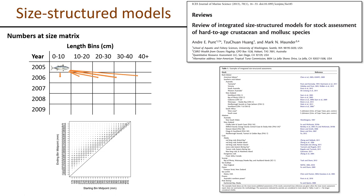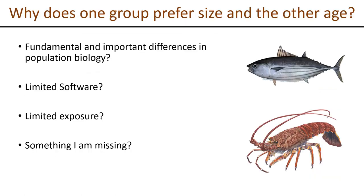The size-structured assessment enterprise has decided to go a different route: instead of developing age-structured models, the predominant approach has been size-structured assessment models where instead of a numbers-at-age matrix, we follow numbers in size bins through time. Individuals transition through size bins according to a growth transition matrix, which determines the probability of staying in your current length bin in the next time step or moving to any greater bin. Many of these assessments have been developed in New Zealand and Australia.